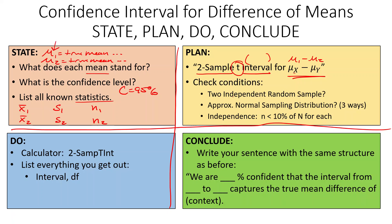We need two independent random samples — that's pretty much always going to be given to us, so just state that it happened and check it off. For approximately normal sampling distribution, we have three ways: a normal population (rare), n greater than or equal to 30 so the CLT kicks in, or if n is less than 30, we actually have to draw a graph to verify no outliers and not strongly skewed.